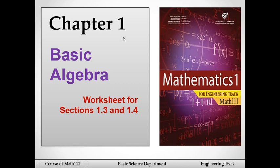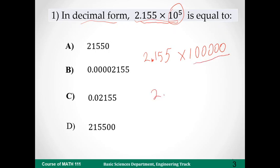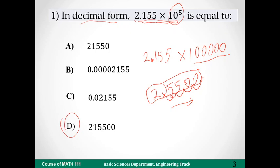This is the answer sheet for sections 1.3 and 1.4. Let's look at this question: what is this number in decimal form? Here we multiply it with a number with five zeros, which means 100,000. So as you see, if we have zeros here, we will shift the dot to the right — one, two, three, four, five. So the dot comes up to here and the answer will be 215,500.